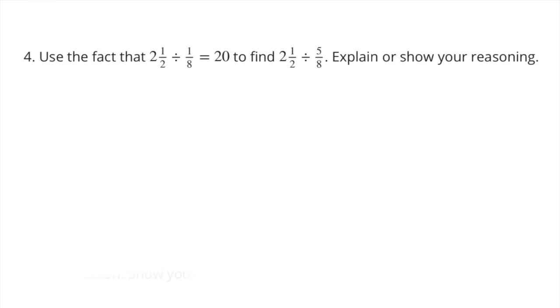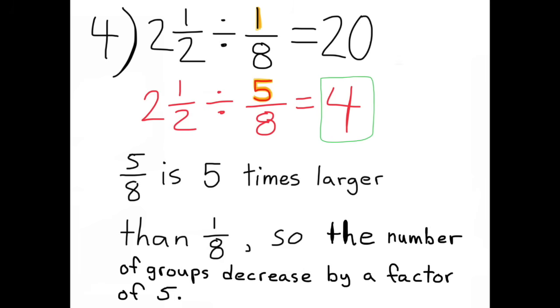Number 4. Use the fact that 2 and a half divided by 1 eighth equals 20 to find 2 and a half divided by 5 eighths. Explain or show your reasoning. 2 and a half divided by 5 eighths equals 4. 5 eighths is 5 times larger than 1 eighth, so the number of groups decrease by a factor of 5.